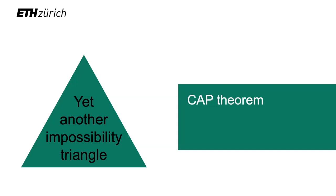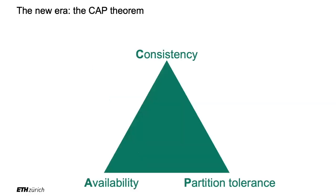So we are dropping ACID — atomicity, consistency, isolation, durability. The question is what do we replace it with? We replace it with the CAP theorem, a paradigm we'll see every week. The CAP theorem is an impossibility triangle: among three things, you can only have two. The three vertices are consistency, availability, and partition tolerance — the three CAP. Note that the C here is not the same C as in ACID. It's a different kind of consistency.